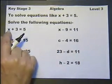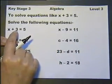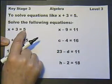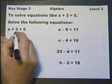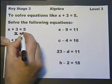We can think to ourselves, something add 3 is 5. 2 add 3 is 5, so the missing number must be 2. So we write down x equals 2.